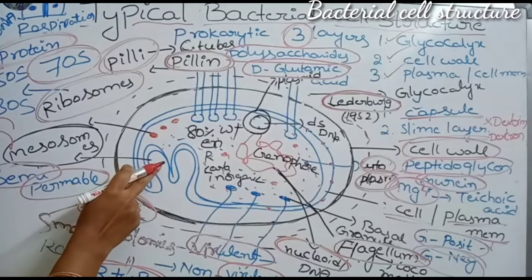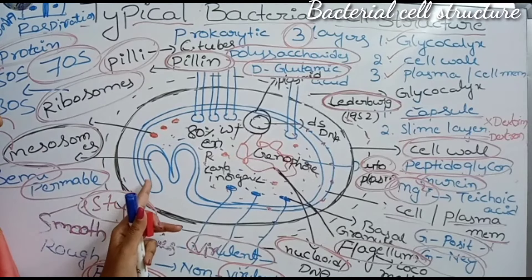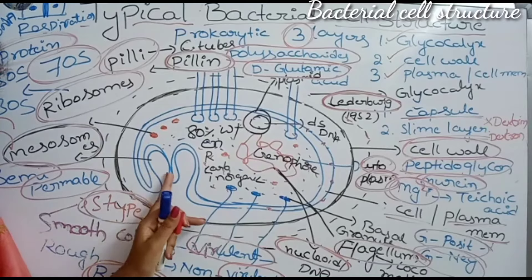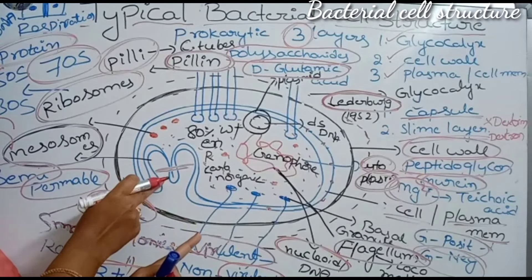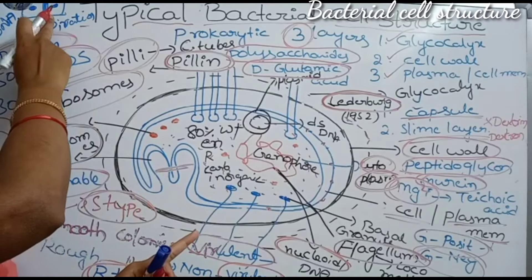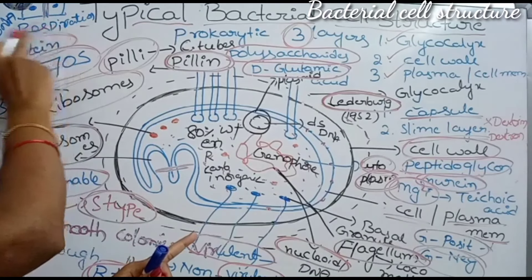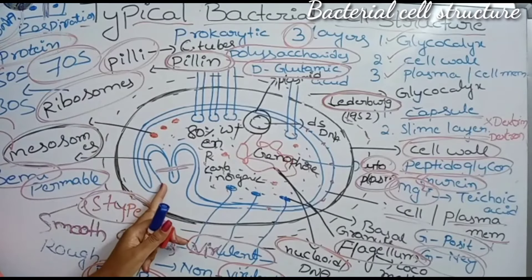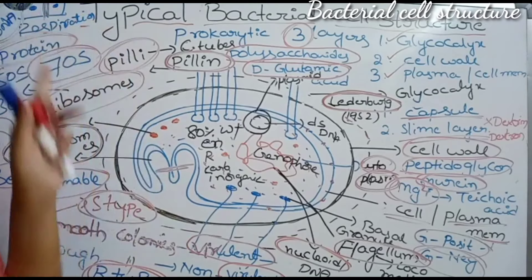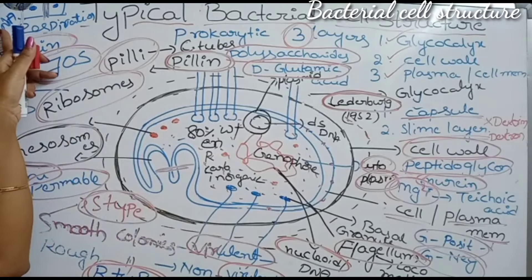Mesosomes arise from infoldings of the plasma membrane. They are used during cell division for the formation of a cross wall. They are also involved in cell respiration and DNA replication — important for MSET students.